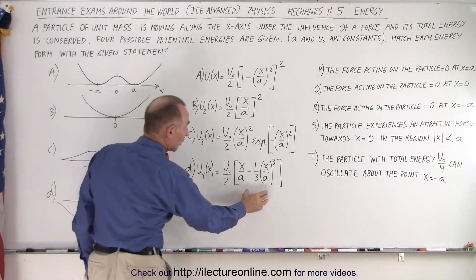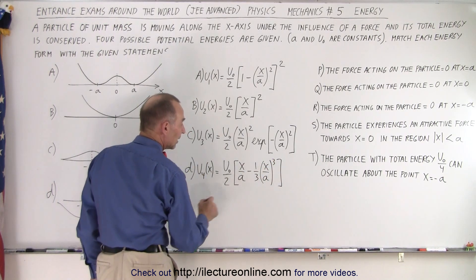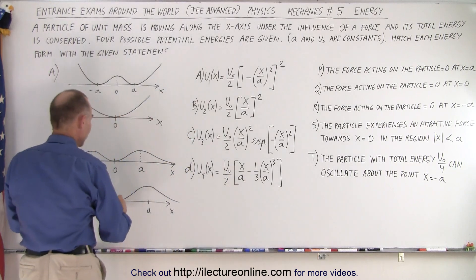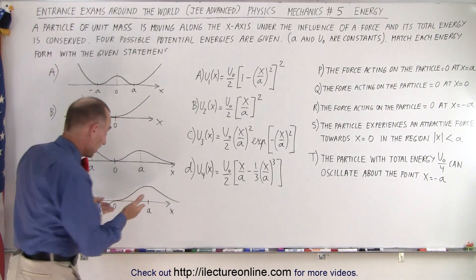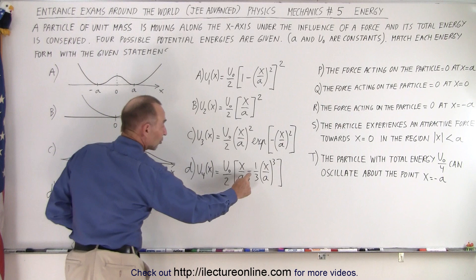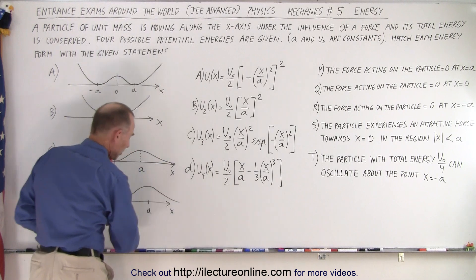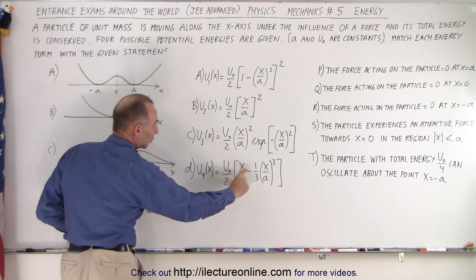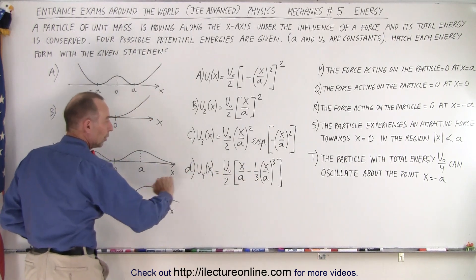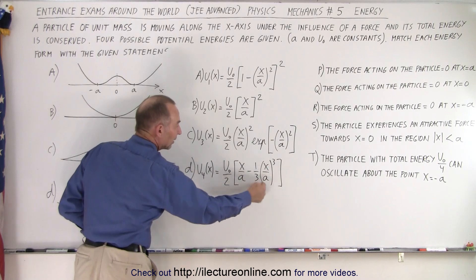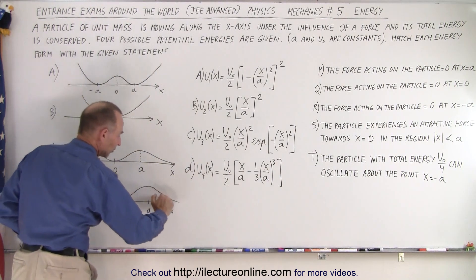Finally, the fourth equation has x over a to the third power multiplied by 1 over 3, subtracted from x over a. If it were simply x over a, you'd get straight lines. But when you subtract the cubic term, on the right side you reach a maximum value at x equals a — that's 1 minus 1 third, giving 2 thirds of u sub nought over 2. As x grows beyond a, the cubic term dominates and the value diminishes.